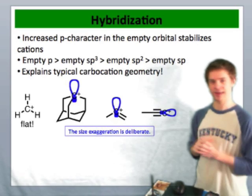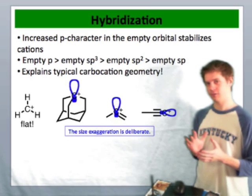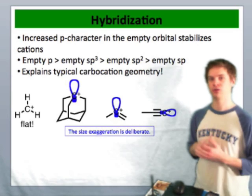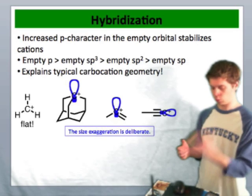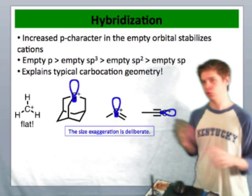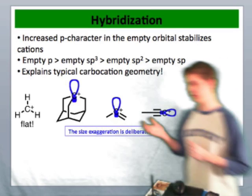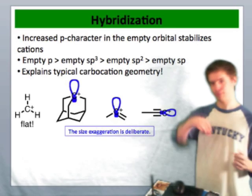And finally, the sp-hybridized cation, the alkynyl cation is horrifically unstable and never observed because then we're at 50% s character and that's way too much s character, an orbital way too close to the nucleus to exist for an appreciable amount of time. Any stray electrons that this orbital finds are going to pop right into it very quickly.